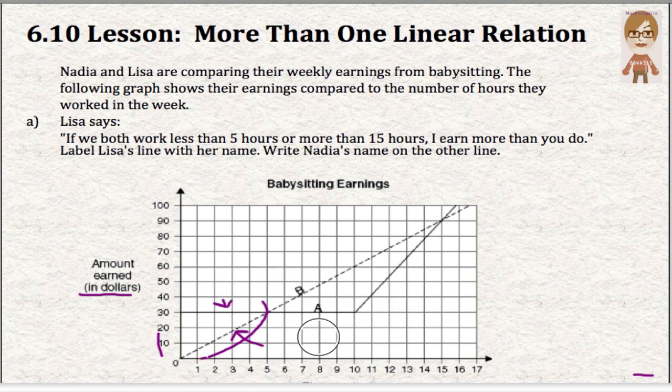So what we need to do first, our first part of this, is to note that this must be Lisa and that the dotted line must be Nadia. So in this section right there, Lisa makes more and Nadia makes less because her line is lower.